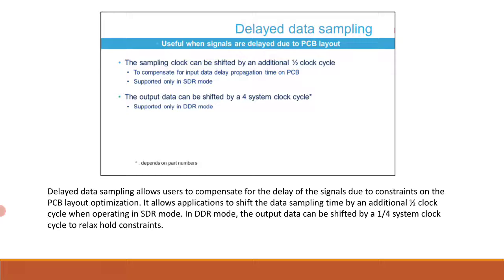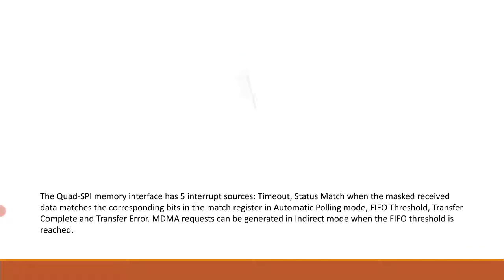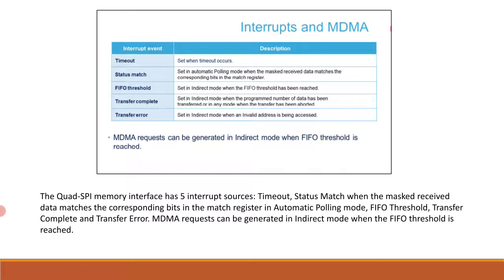The Quad SPI memory interface has five interrupt sources: timeout, status match (when masked received data matches the match register in automatic polling mode), FIFO threshold, transfer complete, and transfer error. MDMA requests can be generated in indirect mode when the FIFO threshold is reached.